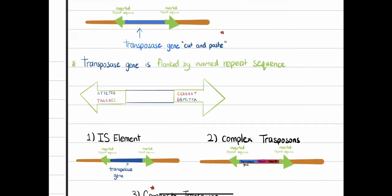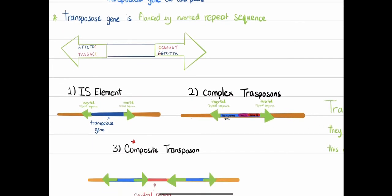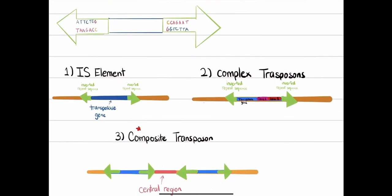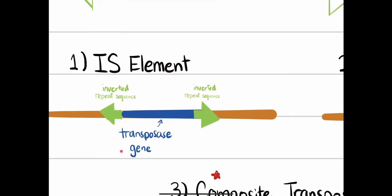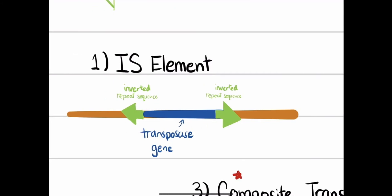There are three kinds of transposons. The first is the IS element, which is a basic transposon. Transposons contain the gene for the transposase — the enzyme that cuts the transposon off. The IS element also has the inverted repeat sequences. This is the simplest form of transposon.